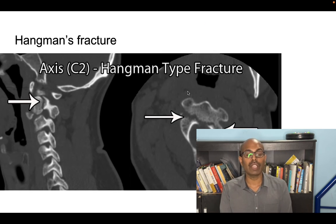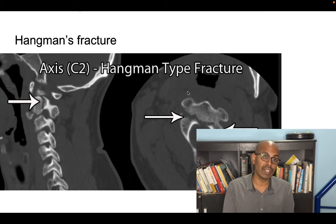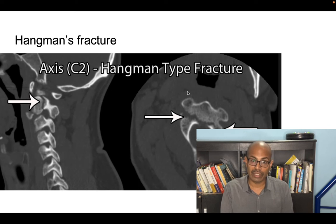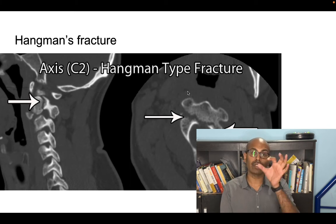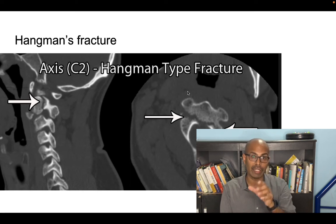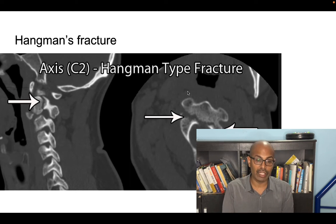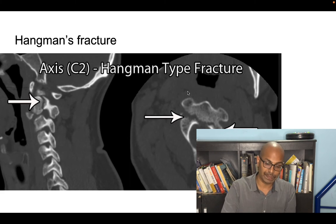Next is the hangman's fracture. When someone is hanged — or during a death penalty — the bone that fractures is C2 (the axis bone), which compresses or damages the spinal cord at the level of the respiratory centers, causing death. Hangman's fracture is therefore a fracture of C2 or the axis bone.